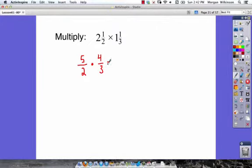Now step two is to multiply. 5 times 4 is 20. 2 times 3 is 6. Very good, we've got 20 over 6. Now we need to reduce that or simplify it. So 20 over 6 is the same thing as 20 divided by 6.